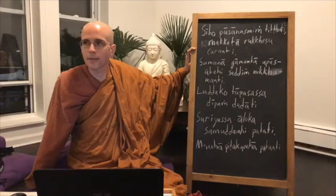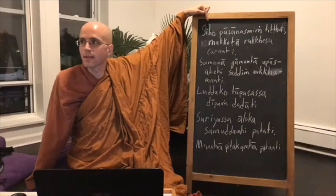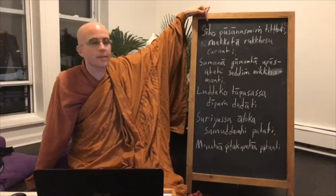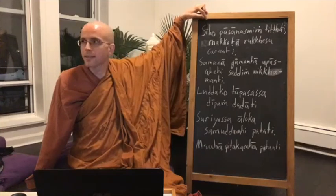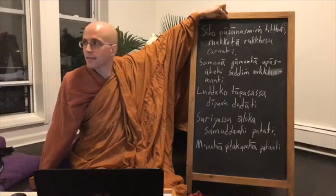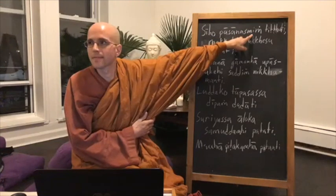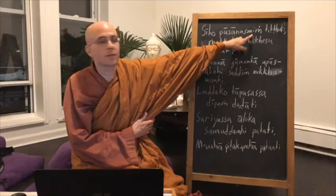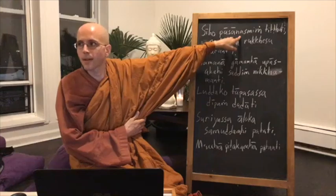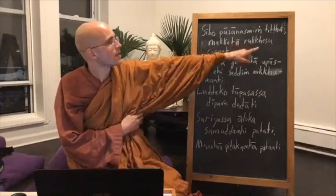First sentence: Siho Pasanasming Tittati. Siha — lion — is nominative singular. Pasanasming — stone — has the Sming ending, making it locative, probably 'on the stone.' Tittati is third-person singular present tense: 'stands.' Putting it together: 'The lion stands on the stone.' There are no articles in Pali, but when translating into English it's important to include them. The lion stands on the stone.